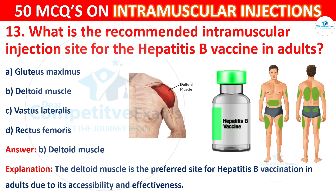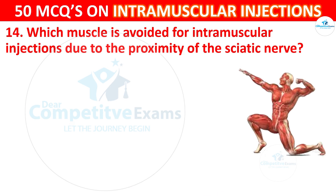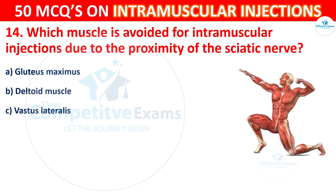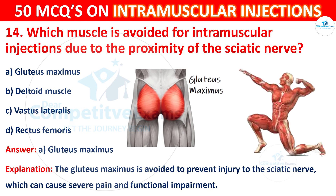Question 14: Which muscle is avoided for intramuscular injections due to the proximity of the sciatic nerve? Options are: gluteus maximus, deltoid muscle, vastus lateralis, or rectus femoris. The correct answer is A, gluteus maximus. The gluteus maximus is avoided to prevent injury to the sciatic nerve, which can cause severe pain and functional impairment.